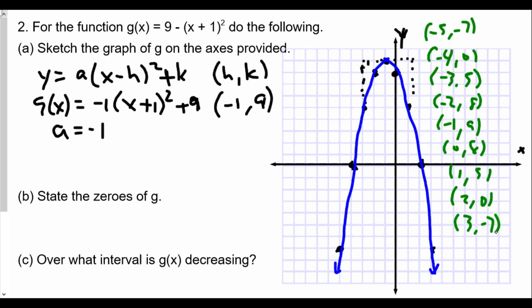Now what are the zeros of our graph? The zeros here are where the graph crosses the x-axis, where g(x) = 0. We see that occurring at x = -4 and x = 2. These coordinates are (-4, 0) and (2, 0).